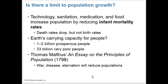Technology, sanitation, better medication, and being able to have more food and agriculture increase population by reducing infant mortality rates — that's the rate at which infants die. That drops the death rate but not the birth rates. So populations continue to grow because of our better technology, sanitation, medication, and agriculture.